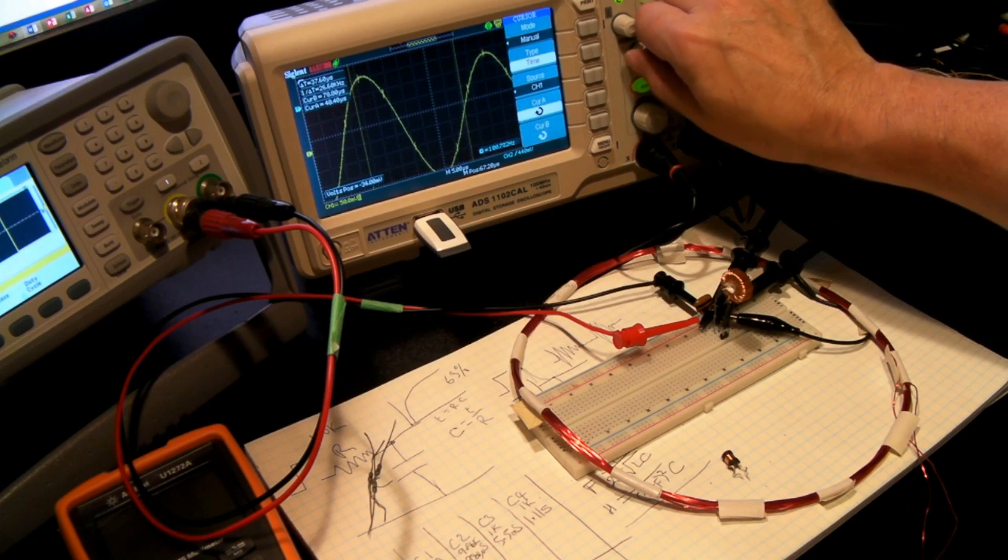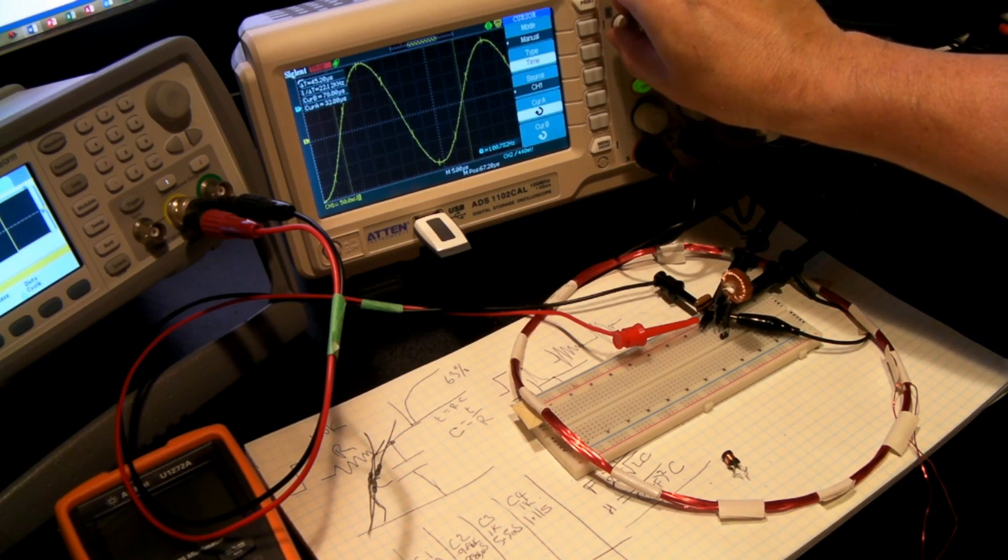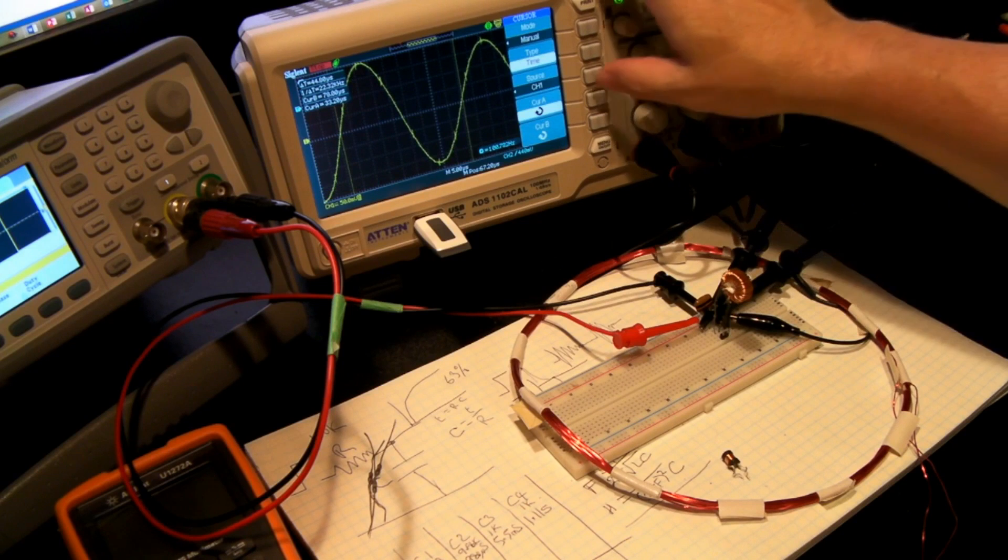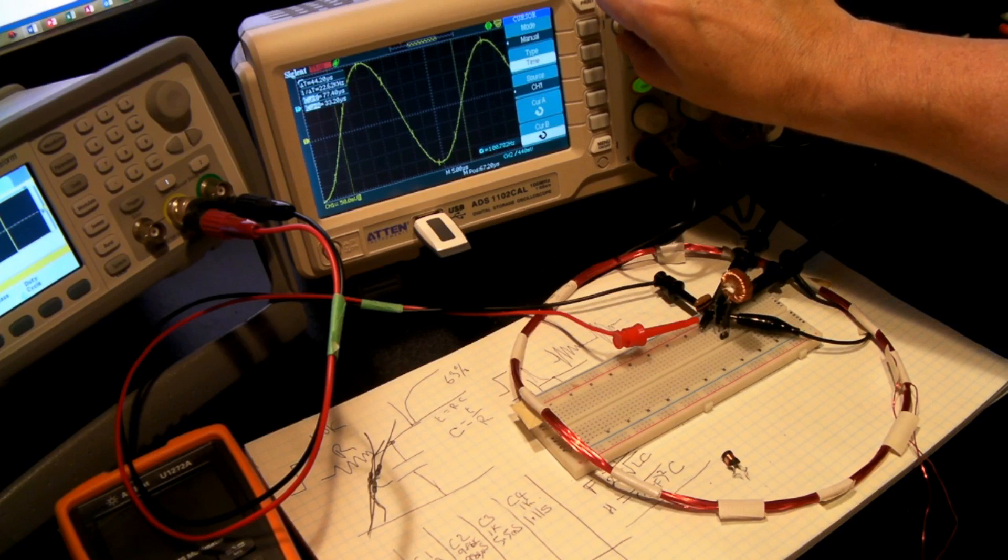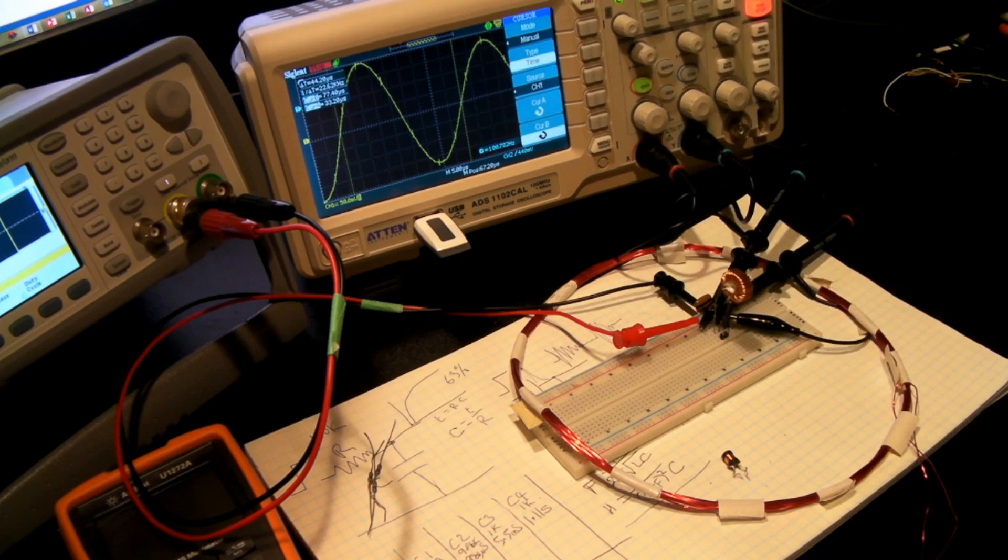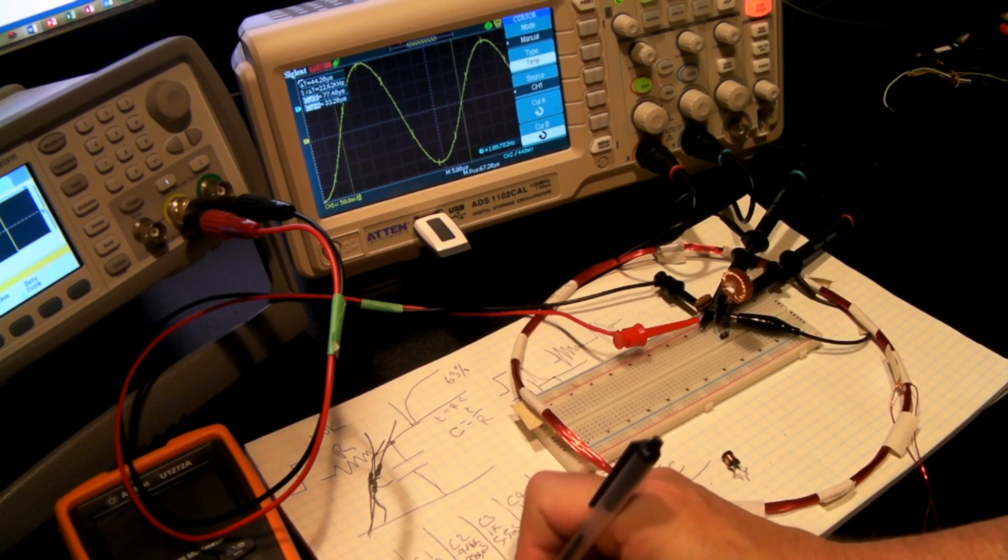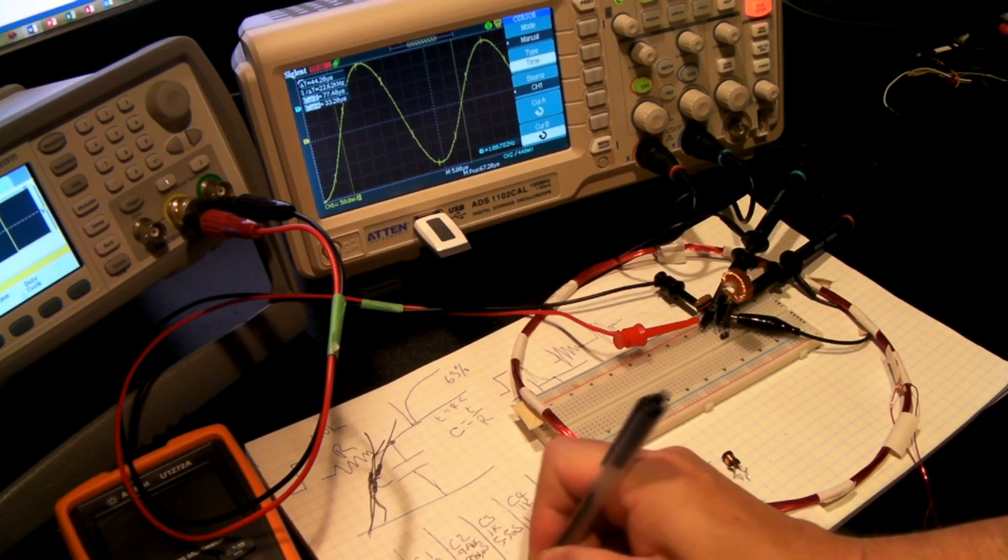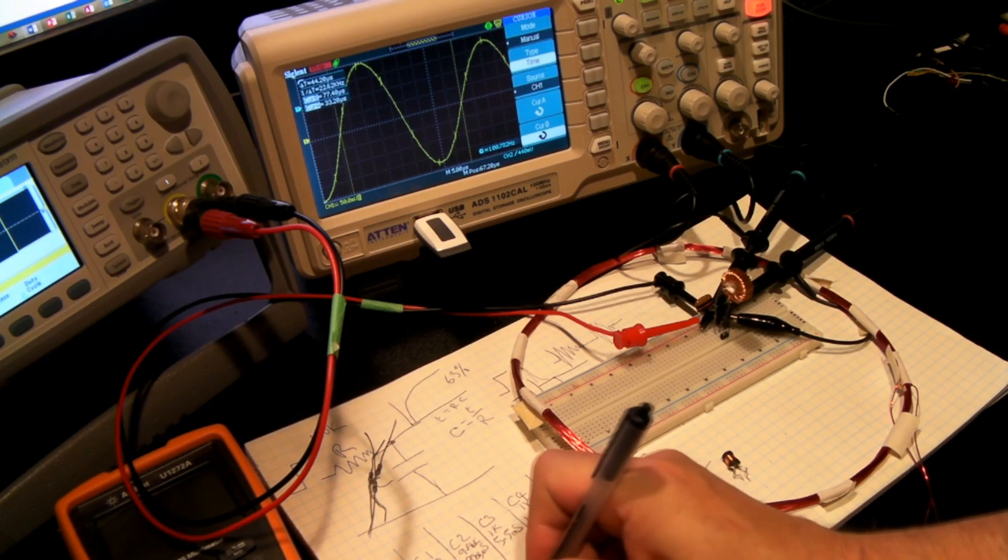So cursor A, wrong adjustment. And go to the rising side this time. So we'll put that on the cross. Cursor B, and we'll move this one across. All right, so this time we've got 44.2 microseconds. So L2 is 44.2 microseconds, which equates to 22.62 kilohertz.